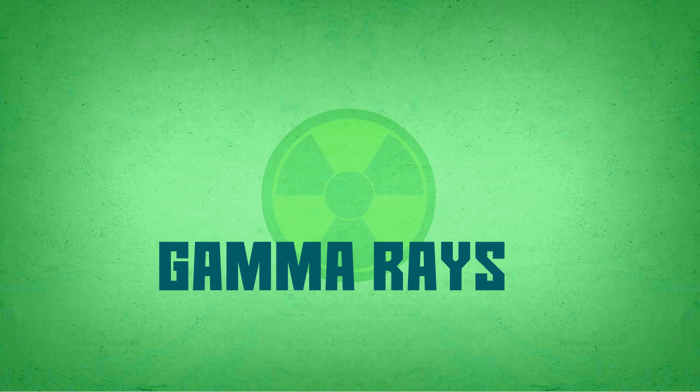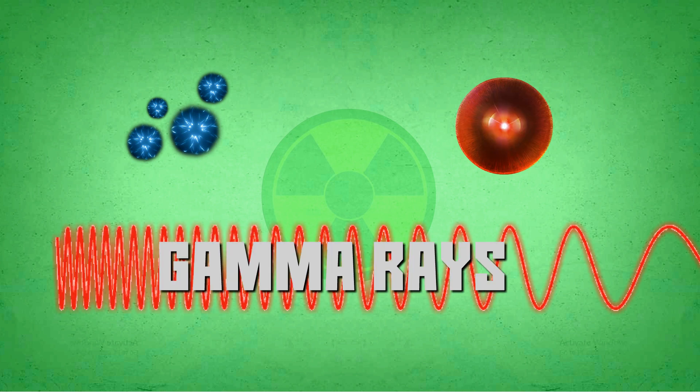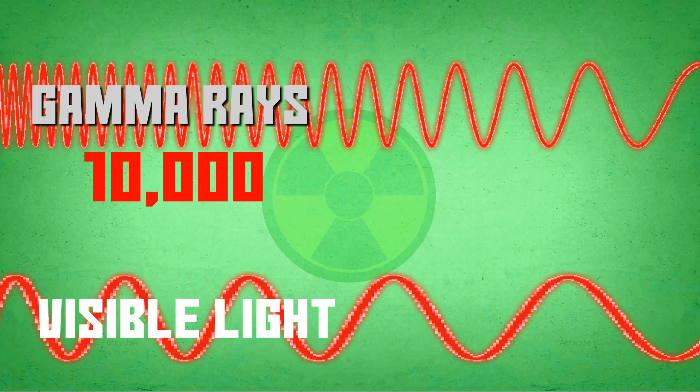And finally, gamma rays. It is an electromagnetic radiation of a kind, which consists of photons in the highest observed range of photon energy. It has the highest frequency and shortest wavelength compared to the others in the electromagnetic spectrum. It is actually at least 10,000 times stronger than the visible light.